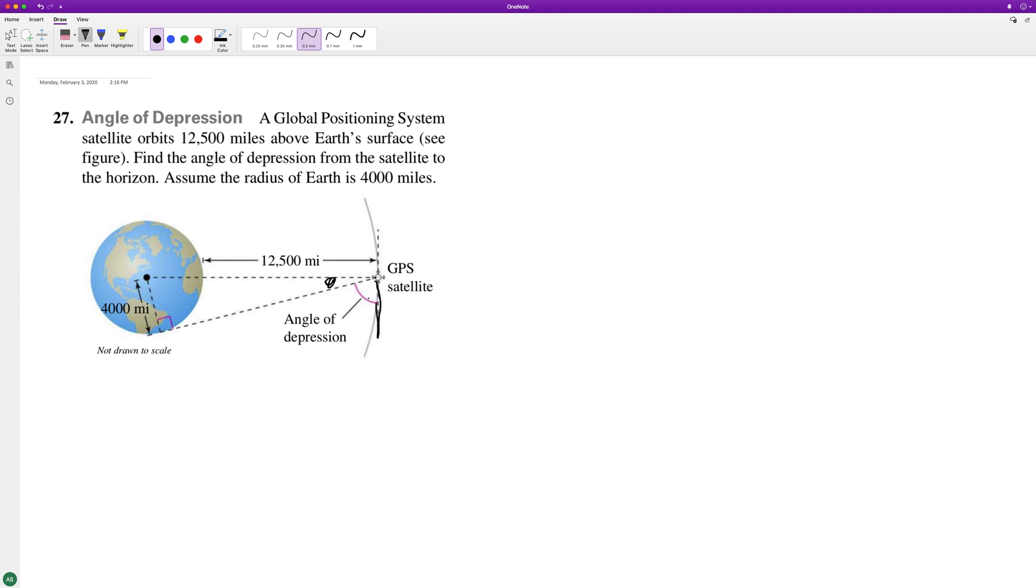And it says this angle of depression is going to be 90 degrees with this. So all we have to do is find this angle here and then subtract it from 90.